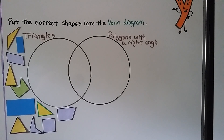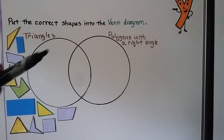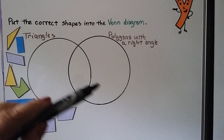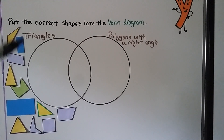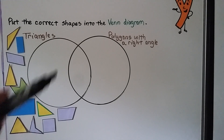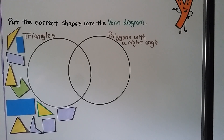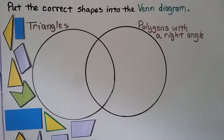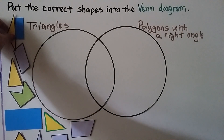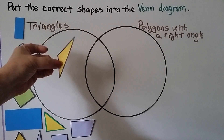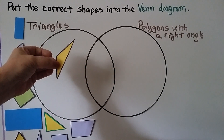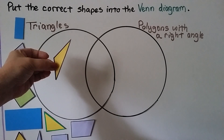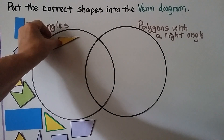Here we have an empty Venn Diagram. We need to put the correct shapes into the Venn Diagram. This circle is for triangles, and this circle is for polygons with a right angle. We need to put these shapes in where they belong, or maybe they don't belong. Let's start with this first shape — it is a triangle. Does it have any right angles? No. So we're just going to put it in with triangles.